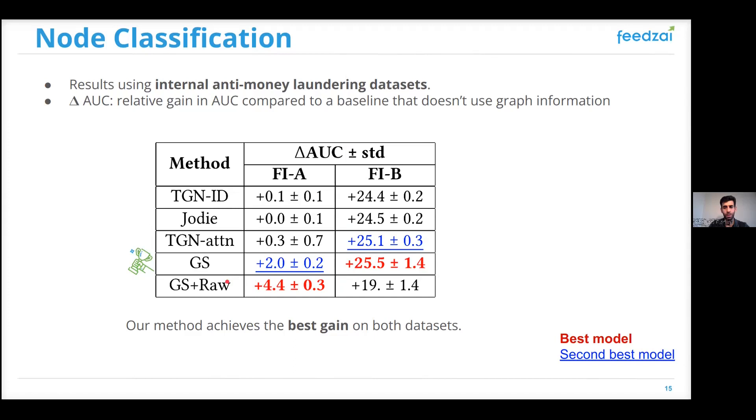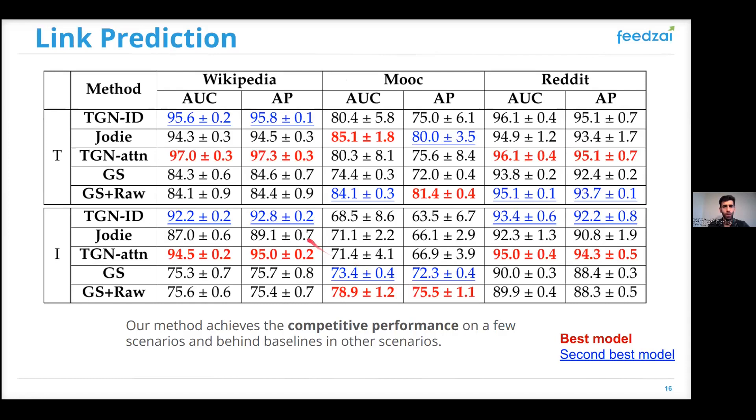In the link prediction experiments, we use the three external datasets, where in both scenarios, the transductive and inductive, where inductive have the condition that the nodes in test were never seen in training. In these datasets, for instance, in the MOOC dataset, we can see that our Graph Sprints achieves the best AUC and average precision.